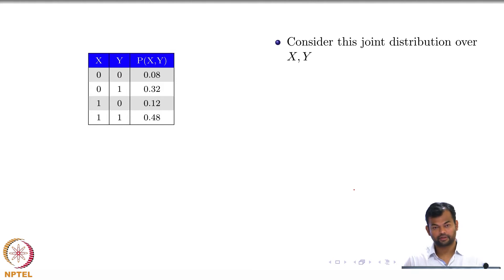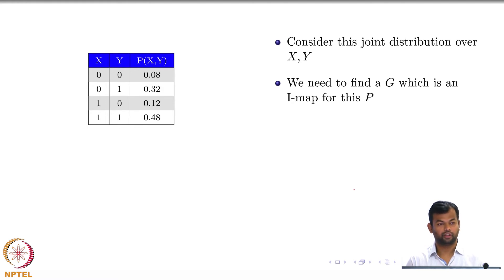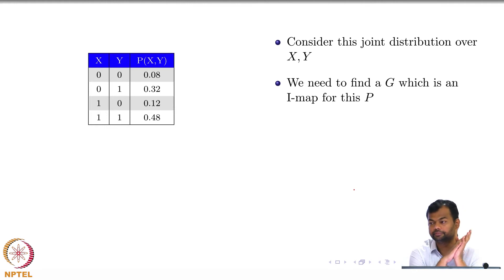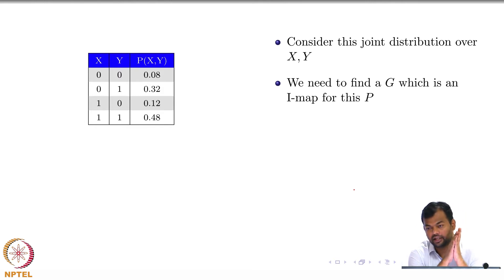Consider this joint distribution over X and Y. We need to find a graph G which is an IMAP for this joint distribution. With two variables, there are only a few graph options. The IMAP has to satisfy the condition that the independences encoded in the graph are a subset of the independences in the distribution. So we first need to identify the independence relations that hold in this distribution.